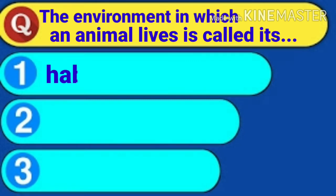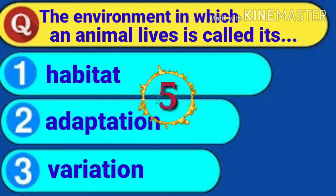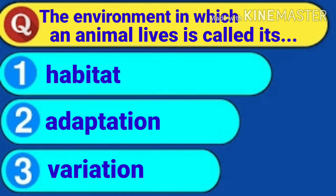The environment in which an animal lives is called: number one, habitat; number two, adaptation; number three, variation. You have five seconds to try yourself. The answer is number one — habitat. Thank you for watching.